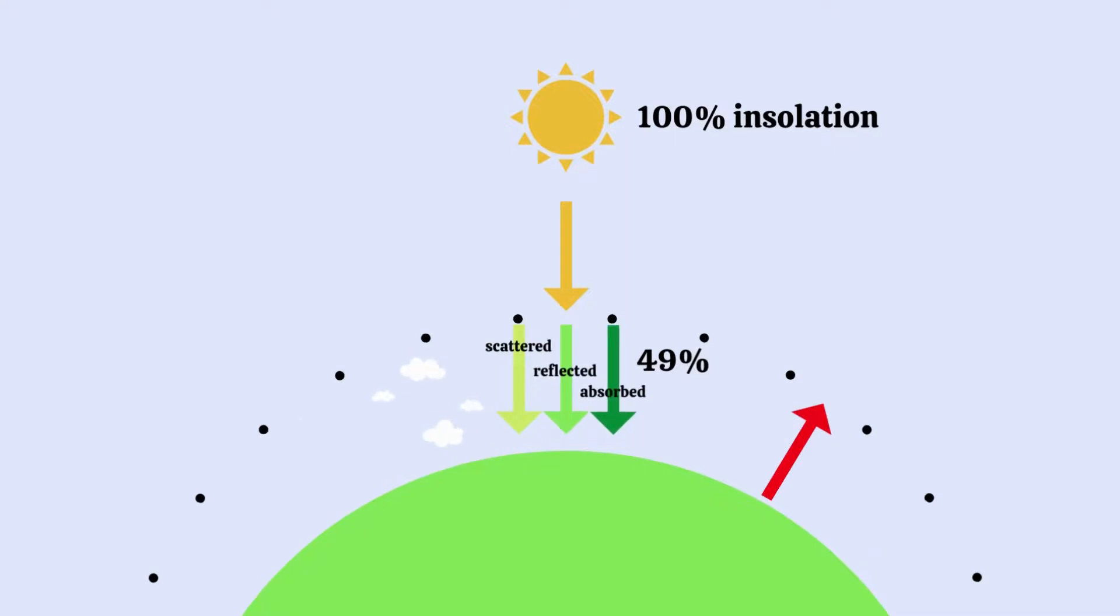Now, if we look at a diagram and we look at the numbers, 100% of the insolation reaches our atmosphere. In the atmosphere, about 49% of this insolation is either scattered, reflected, or absorbed by things like clouds and dust particles like I mentioned earlier. If we take 100% minus 49%, we are left with 51% of this insolation that is then absorbed by the land and oceans.